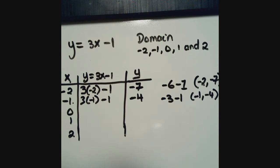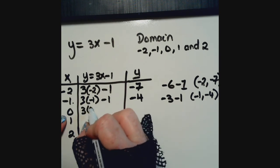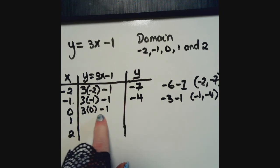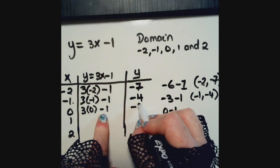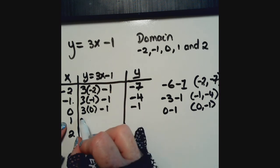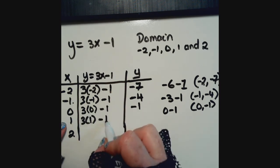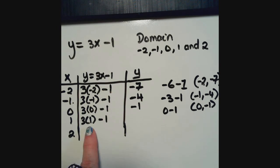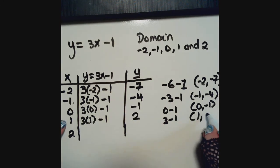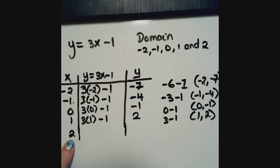For x equals zero: 3 times 0 minus 1. Anything times zero is zero, so zero minus 1 equals negative 1. The ordered pair is (0, negative 1). Then for x equals 1: 3 times 1 is 3, minus 1 equals 2. So the ordered pair is (1, 2).